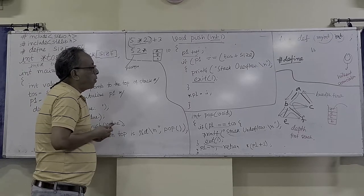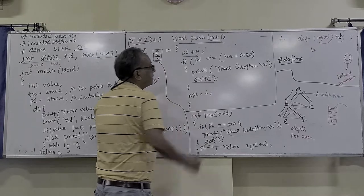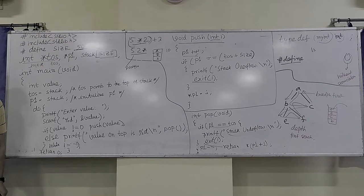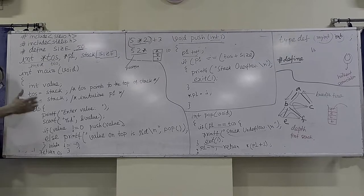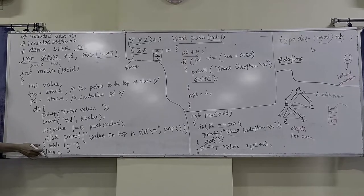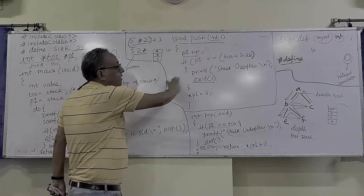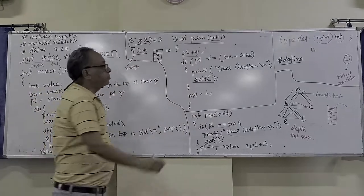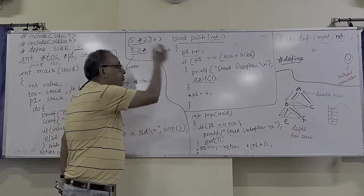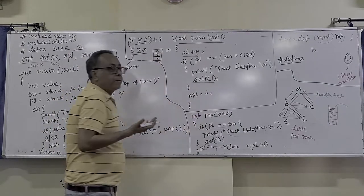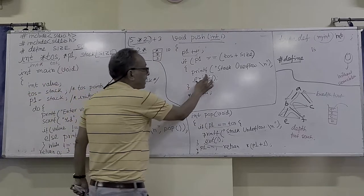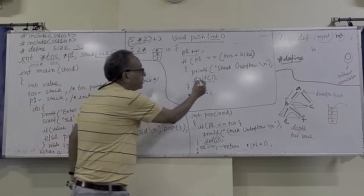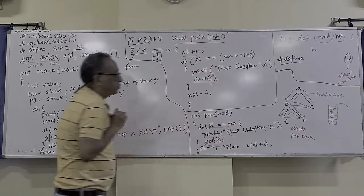Another thing to mention: you use exit(1). exit(1) versus exit(0) — exit(0) means the operating system gets a direct signal. return means it will go to the higher-level calling function. So return(0) is what main should use. But in other functions, if an unrecoverable situation comes — like stack overflow — it should use exit(1). exit(1) means there is some error condition. You can use exit(1) for stack overflow and exit(2) for stack underflow to differentiate error levels.